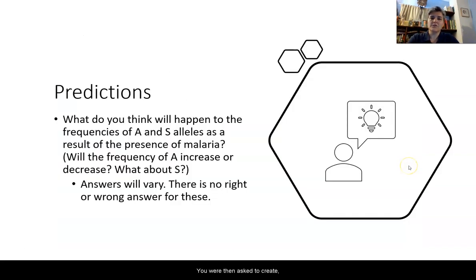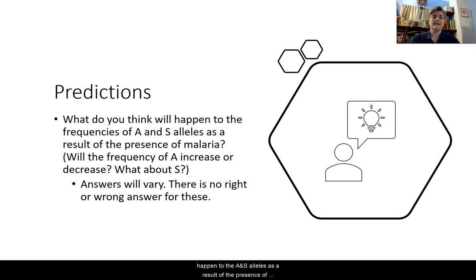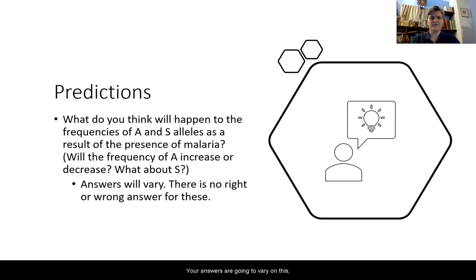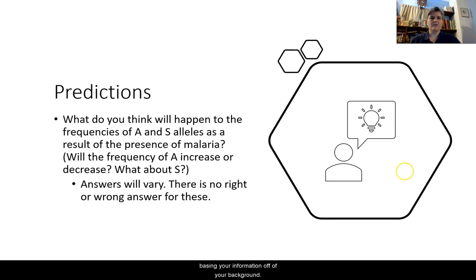You were then asked to draft a prediction based on that information: what will happen to the A and S alleles as a result of the presence of malaria? Will the frequency of A increase or decrease, and what about S? Your answers will vary here. Remember, with predictions there is no right or wrong answer, as you are basing your information on your background knowledge.